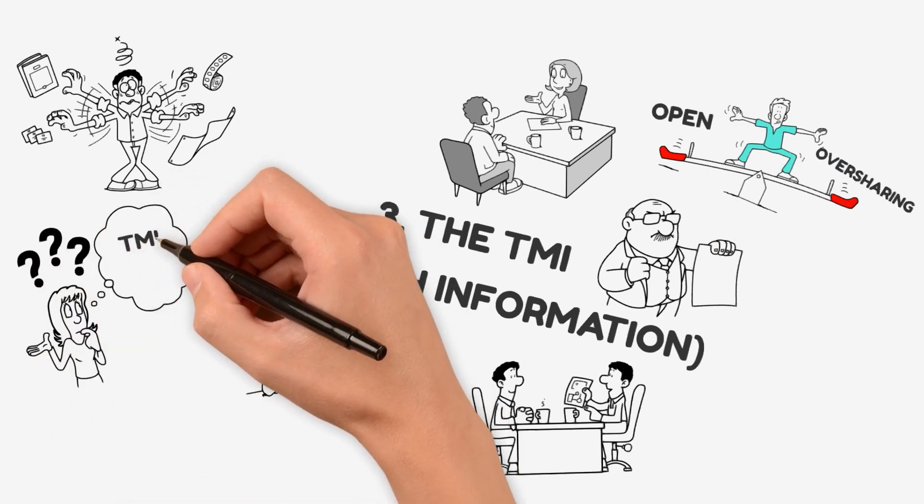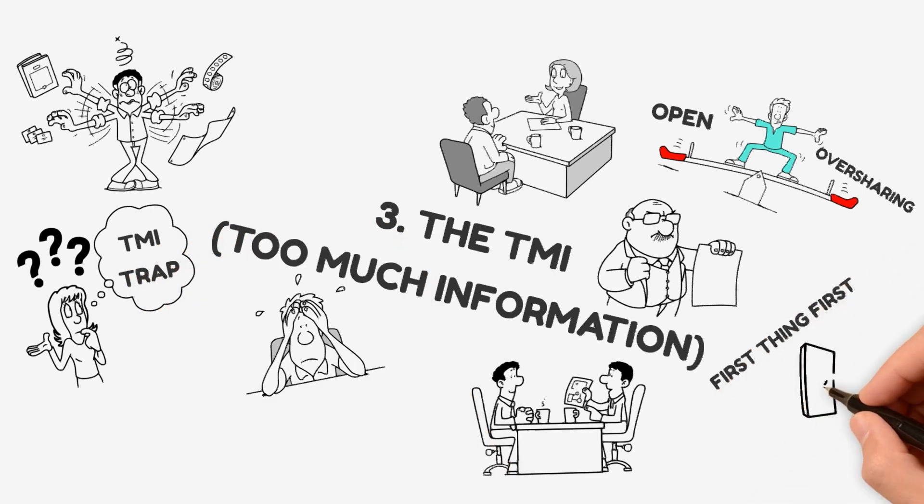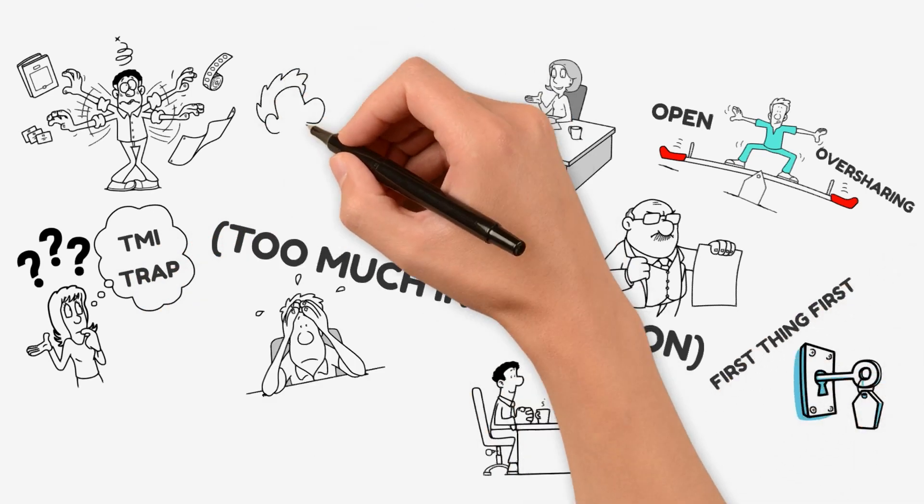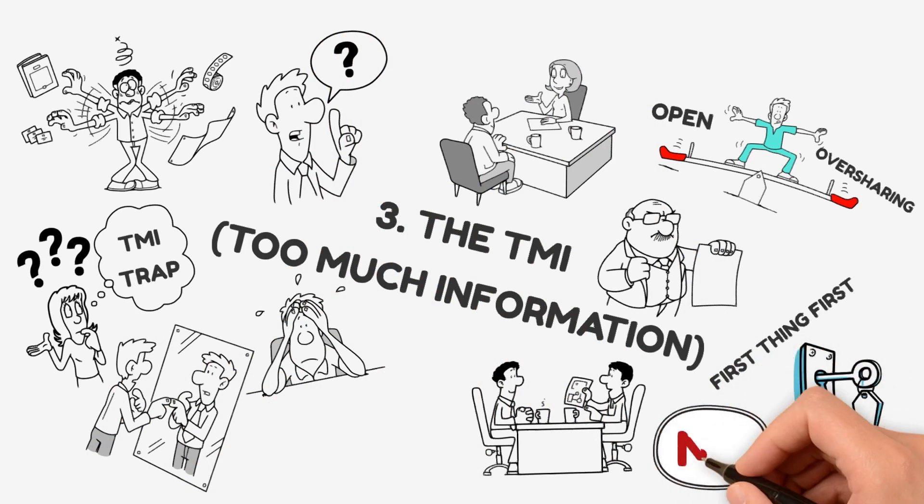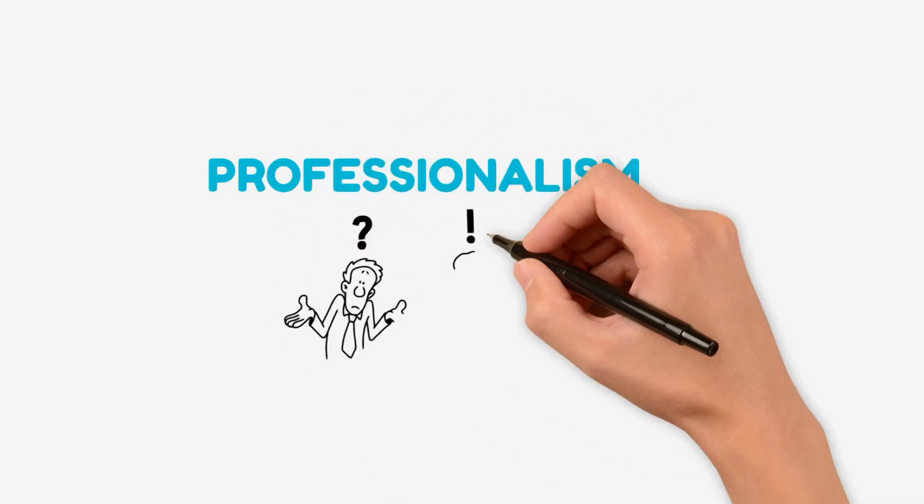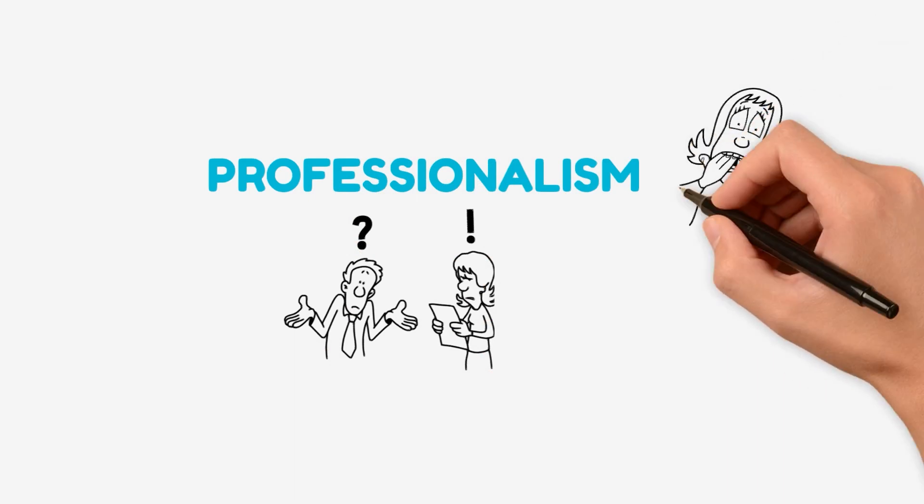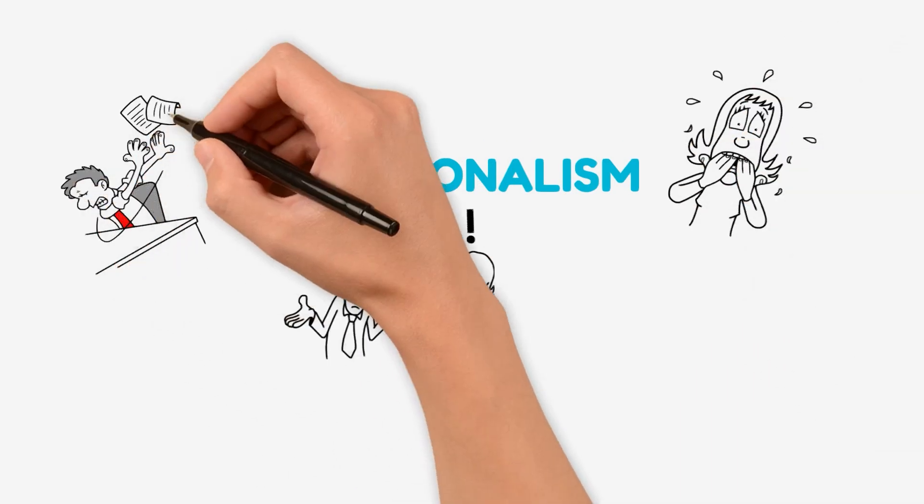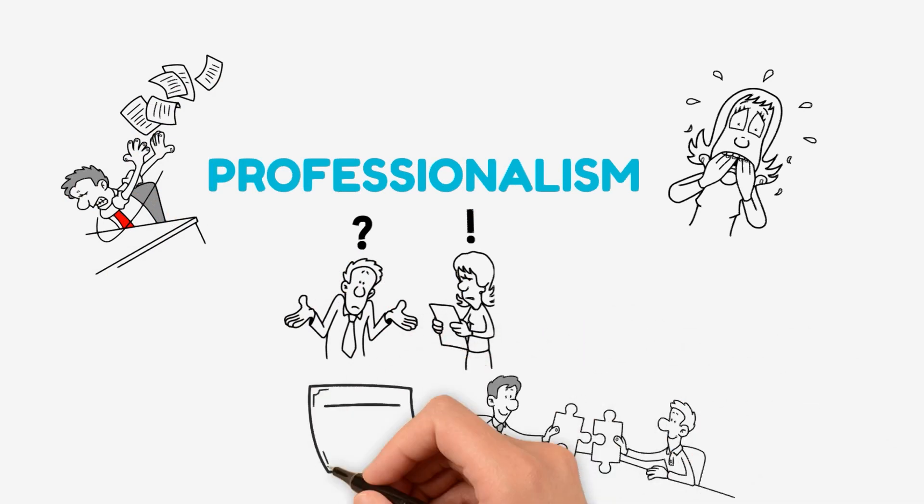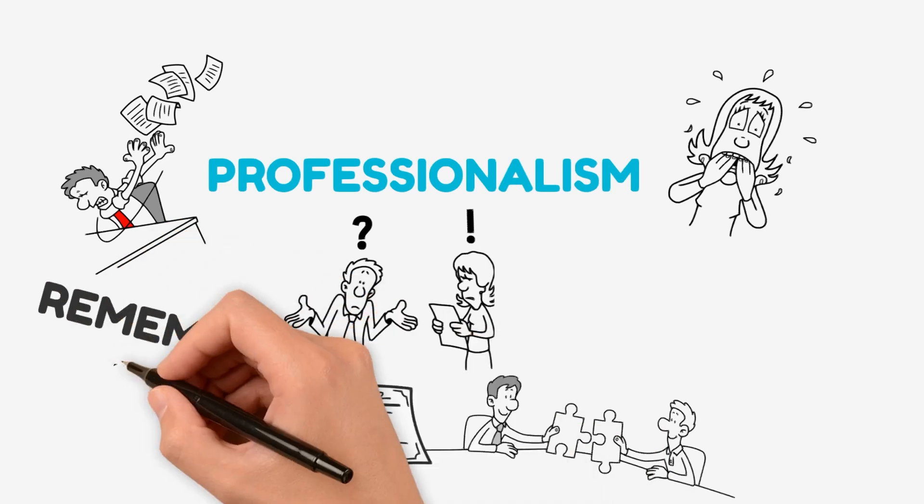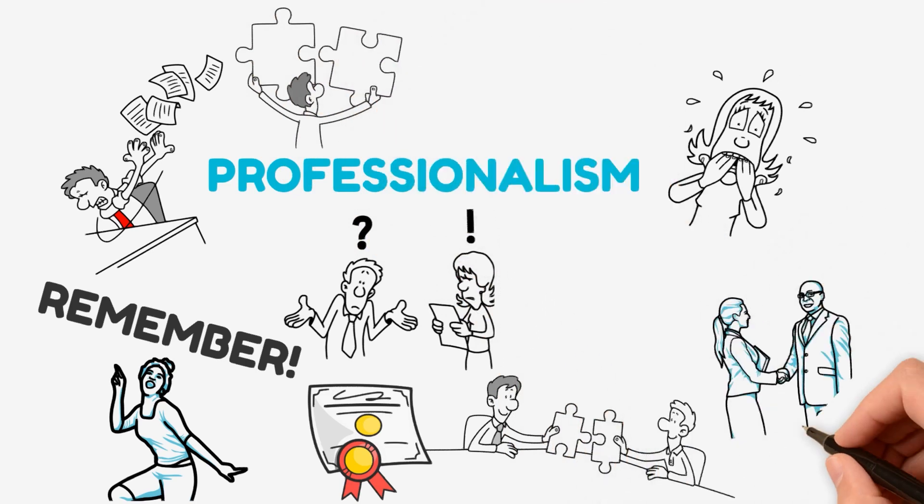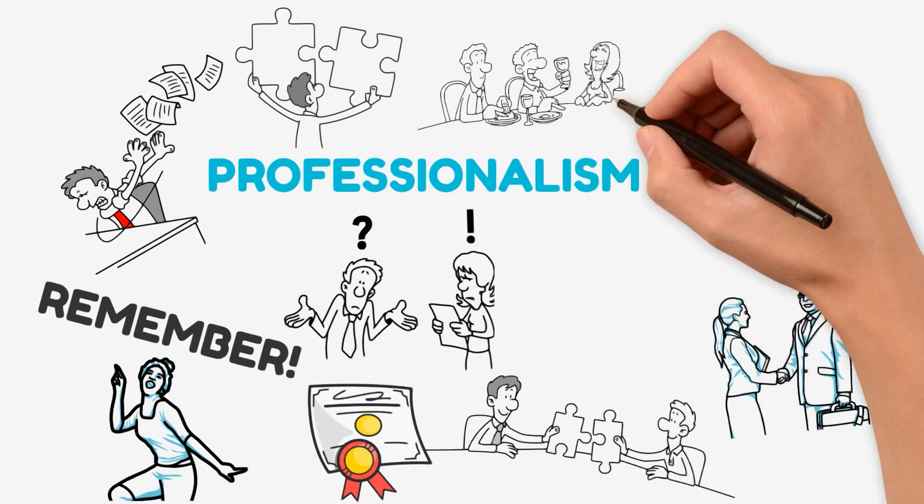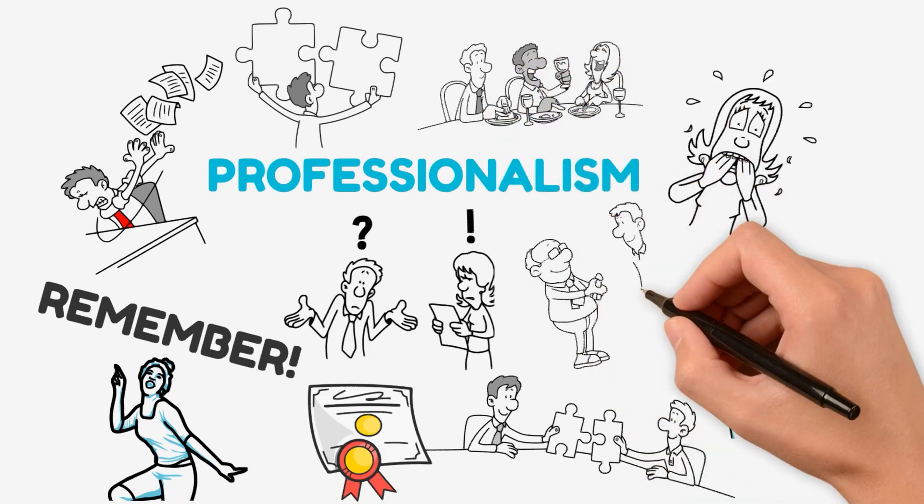First things first, remember that relevance is key. Before sharing any personal information, ask yourself: does this directly relate to the job I'm applying for? If the answer is no, then it's time to zip those lips. Next, let's talk about professionalism. Sharing overly personal or sensitive information can make the interviewer uncomfortable and give the impression that you lack professionalism. So, keep it classy and focus on your qualifications and skills instead. Remember, it's okay to show some personality and connect with the interviewer on a human level. But always keep it professional and relevant. Save the juicy details for your friends and family, not your potential employer.